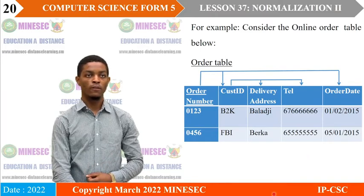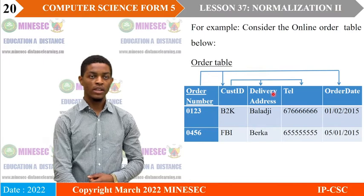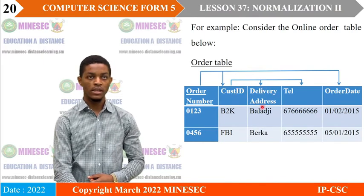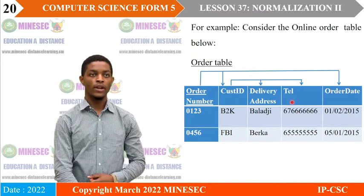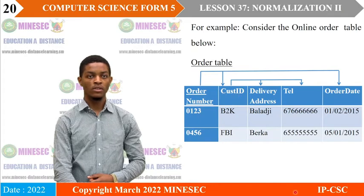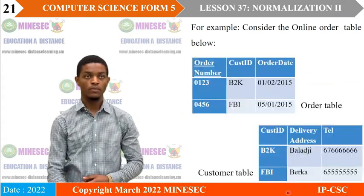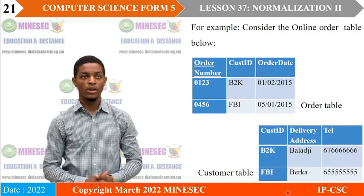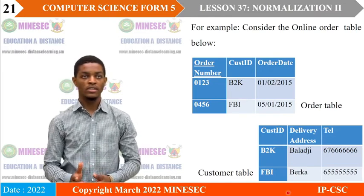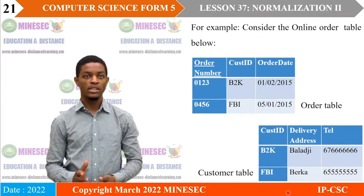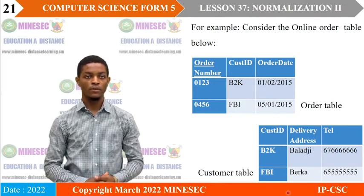To put it in the third normal form, we create one table with customer ID, delivery address, and telephone number, and another table with order number, customer ID, and order date. This removes the transitive dependency.